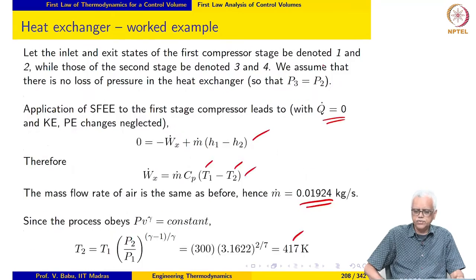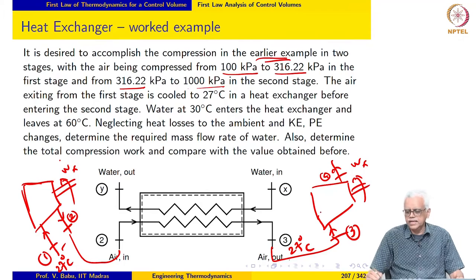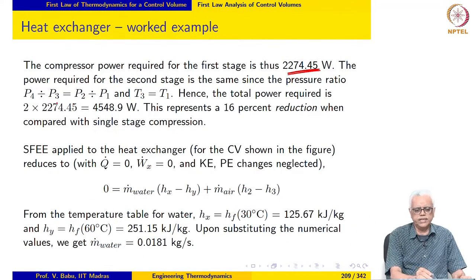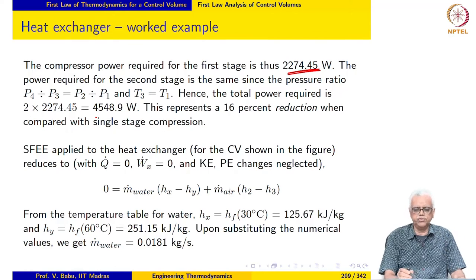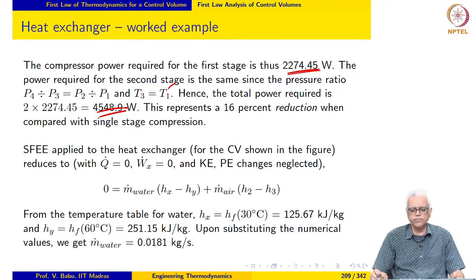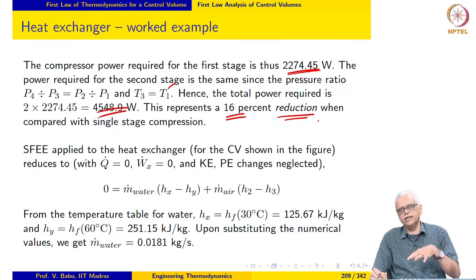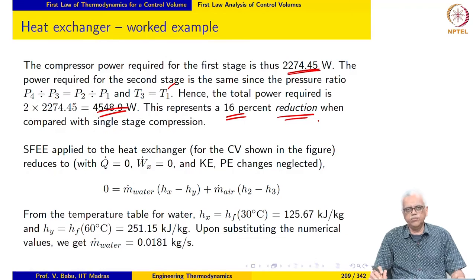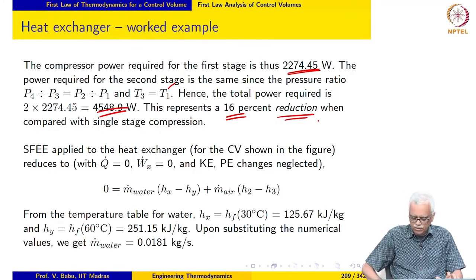At the second stage, the air enters at 27 degrees Celsius — the same as in the first stage — and is compressed to 1000 kPa. Looking at the pressure ratios, P4 over P3 for the second stage and P2 over P1 for the first stage are the same. Since the pressure ratio is the same and the inlet temperature to the compressor is also the same, the power required in the second stage compressor is also the same. The total power required is 4548.9 watts, which represents a 16 percent reduction in power compared with single stage compression. When you cool the air down before compressing it further, the power required definitely goes down — that is what we are seeing here.